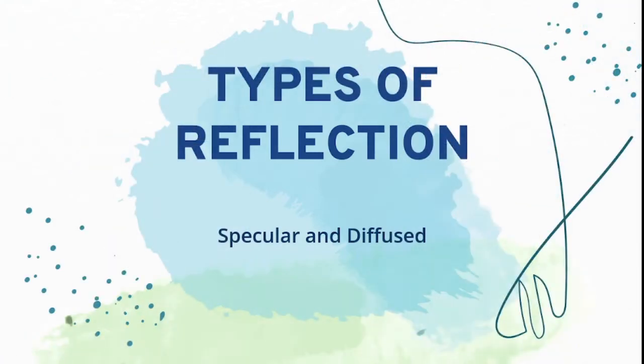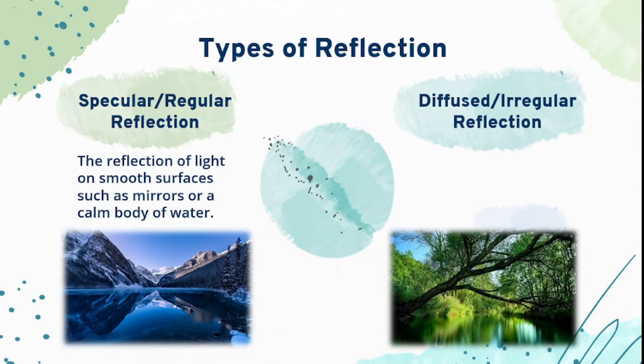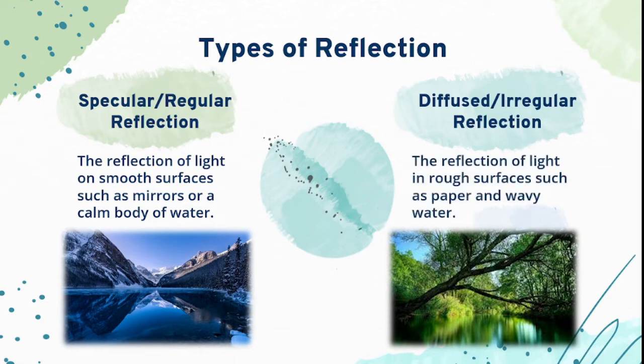There are two types of reflection: the specular and diffused. The specular or regular reflection is the reflection of light on smooth surfaces such as mirrors or a calm body of water. While the diffused or irregular reflection is the reflection of light in rough surfaces such as paper and wavy water.